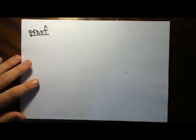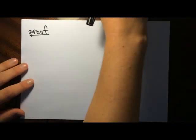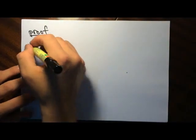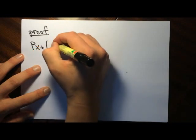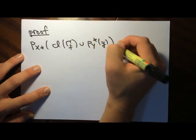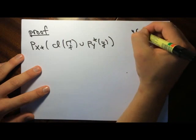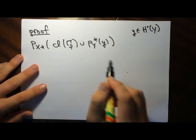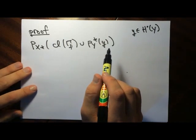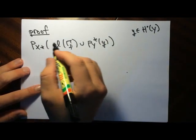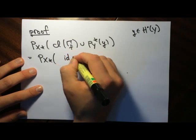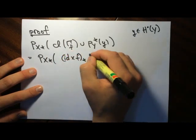We write down this side of the formula: p_X star of the class of the graph of f cupped with the pullback of some class y. This class of the graph of f in the product is really the pushforward of the identity cross f of the unit class — so one is the image of the class of x in the Chow ring.